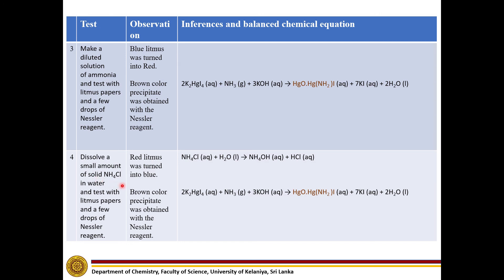In the last step, ammonium chloride solution turns red litmus into blue. Also, with the Nessler reagent, it gives the same brown color precipitate.